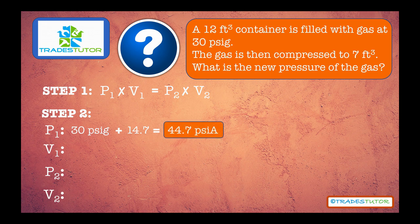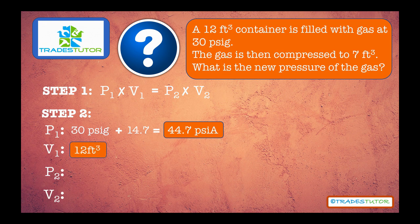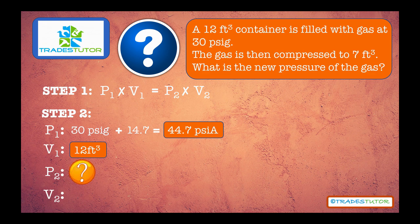Volume, like I said, is already fine as it is, so it's 12 cubic feet. That's volume one. And pressure two, that's what we're trying to figure out. Volume two is seven. So now we have all the variables taken care of. We just got to plug them into the formula.